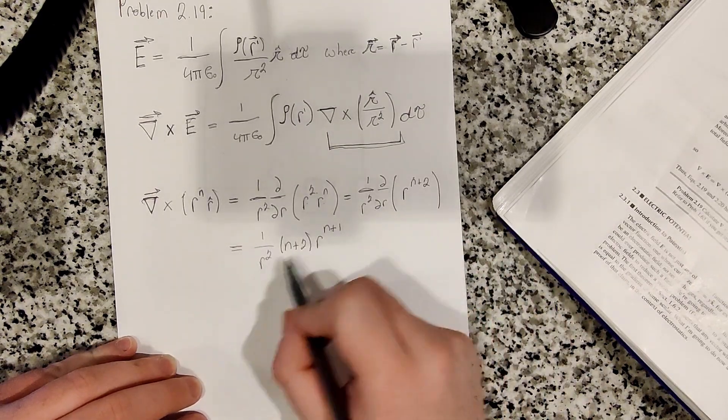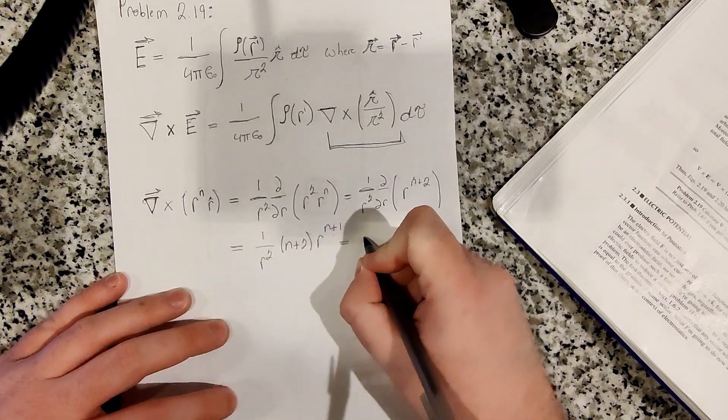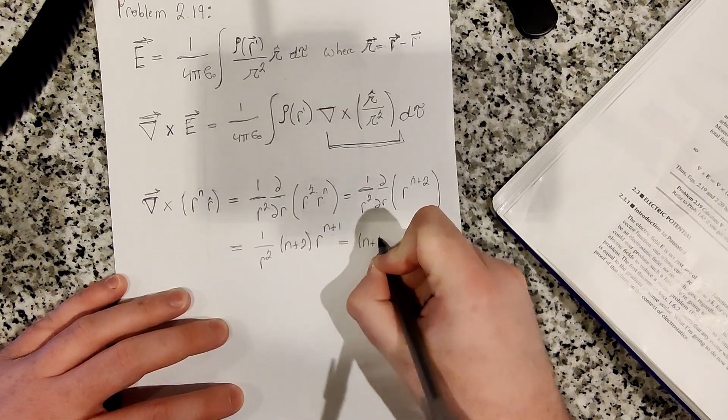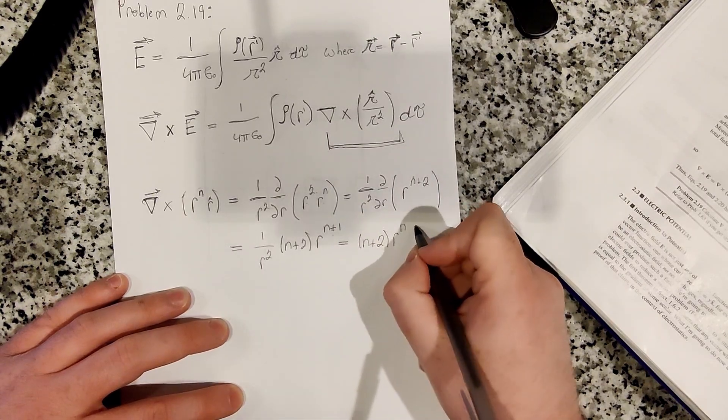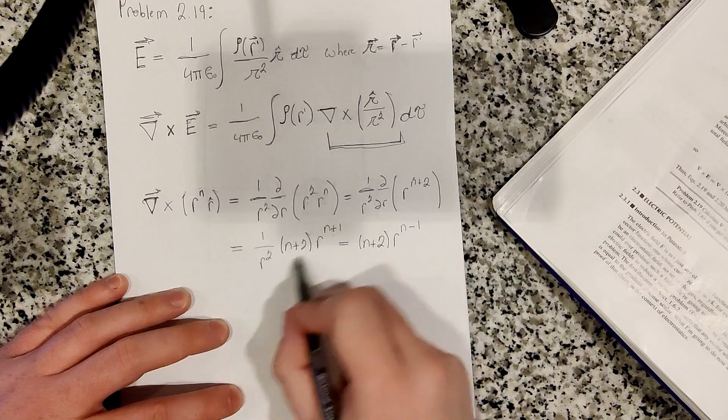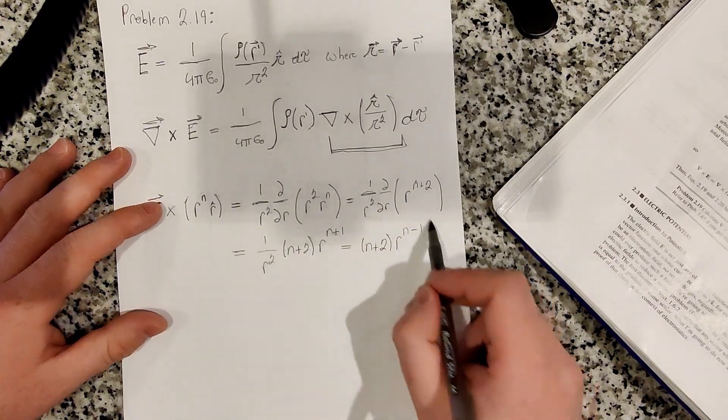And then simplifying this even further, the r to the n plus 1 divided by r squared becomes, we have n plus 2 out front, and r to the n minus 1 after this. All right. So this is our general equation.